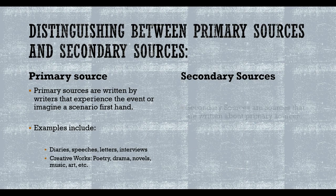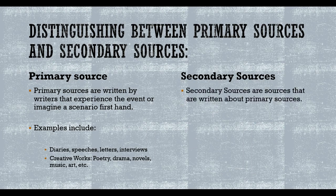Secondary sources are written about primary sources — they analyze and discuss information from the primary source. For example, if a magazine writer wrote about a speech President Bush gave in 2002, that article would be a secondary source. The information is not original but is an analysis of the speech. In simple terms, a secondary source writes or talks about something created by the primary source. For instance, if a person wrote about a painting hanging in an art gallery, that would be a secondary source discussing the original art.